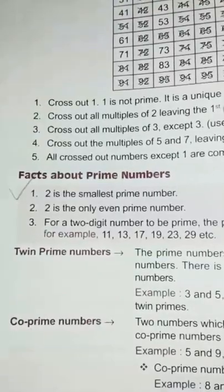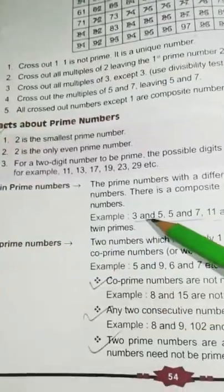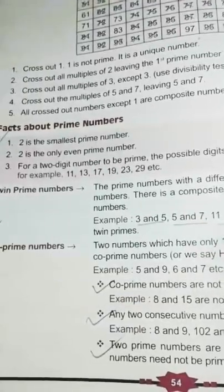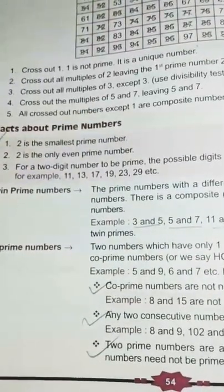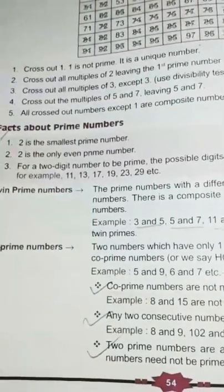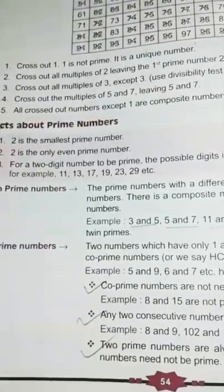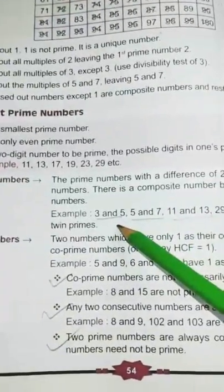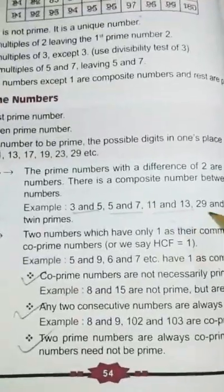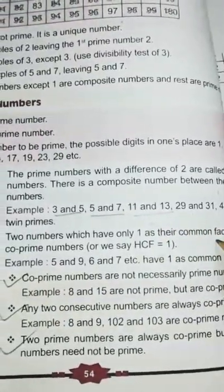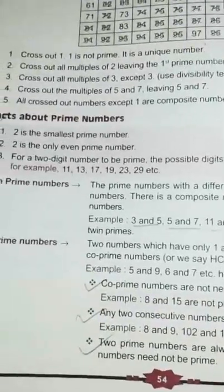Then, comes to twin prime numbers. The prime numbers with a difference of 2 are called twin prime numbers. There is a composite number between the twin prime numbers. For example, 3 and 5, 5 and 7, 11 and 13, 29 and 31, 41 and 43 are twin primes.